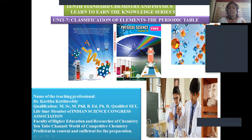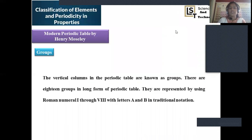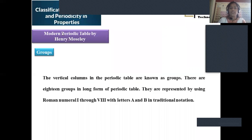In series number five we are going to discuss an extensive study about what is meant by a group in the periodic table and what is meant by a period. Vertical columns and horizontal columns are going to be deliberated in detail. Let us enter into today's concept — first, what is meant by a group in the modern periodic table.